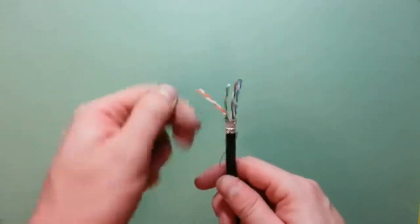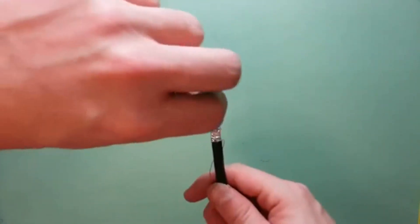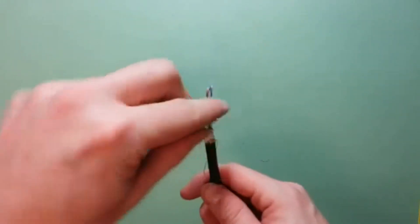Now, untwist the wire pairs and arrange them according to the ethernet standard you are going to use. In this example, I'm going to use T568B.